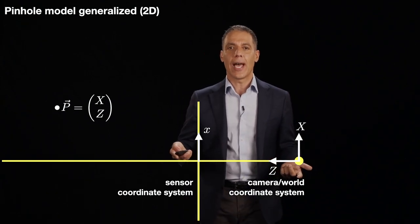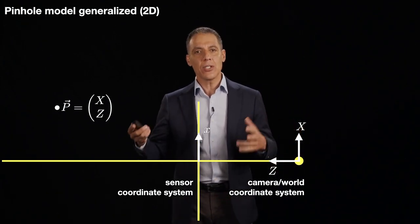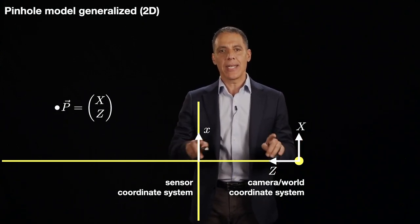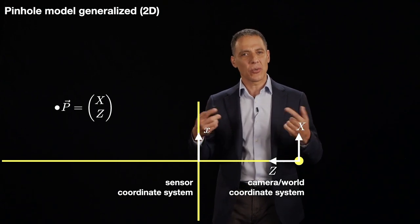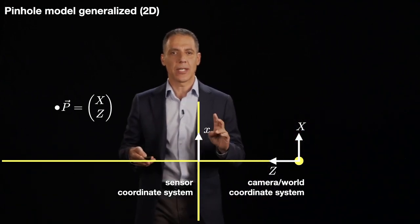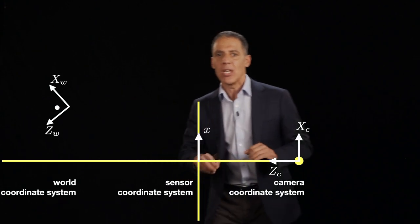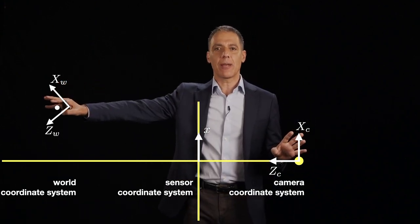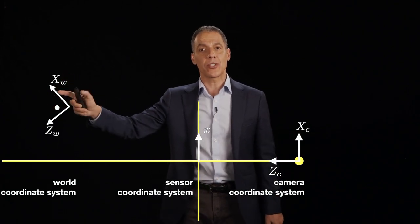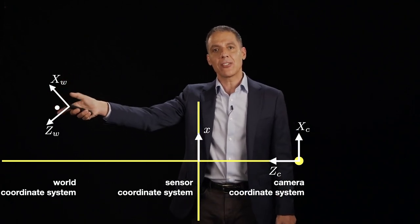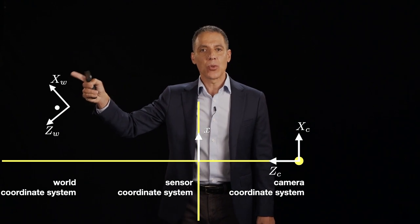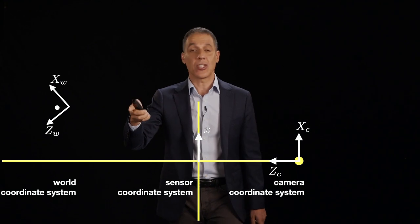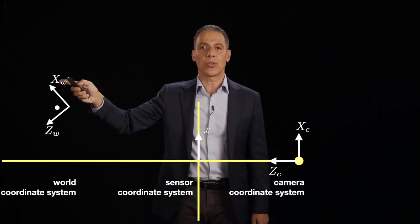We've gotten the basics of perspective projection, which are going to stay the same, and now we just need to generalize, which is going to require a little more geometry and algebra. Let's start by defining our coordinate systems. I'm going to specify points in the world relative to a world coordinate system. You can see I've given the axes here, and notice that my world points are now defined by XW and ZW, the W subscript indicating the world coordinate system.